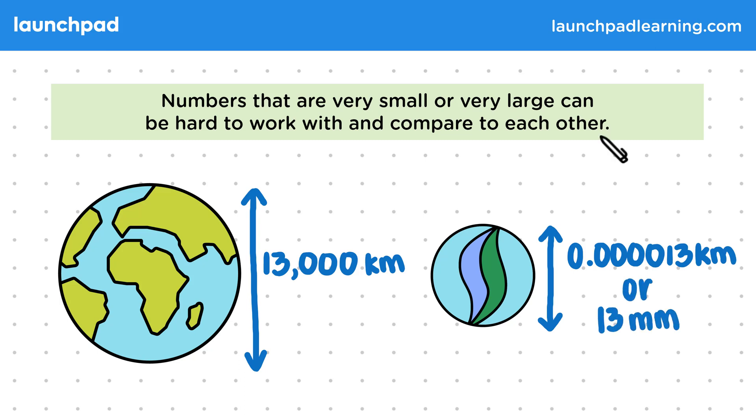You can see that it's too long to write out and say the value of the marble's diameter in kilometers, but then it's also difficult to compare millimeters to kilometers. How can we write these numbers in a way where we can more easily compare the diameter of the marble to the diameter of the Earth?